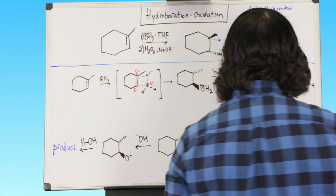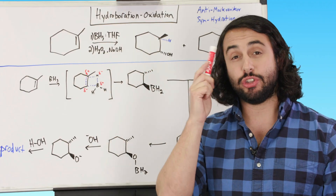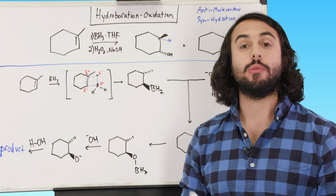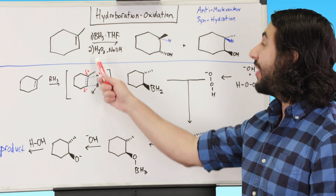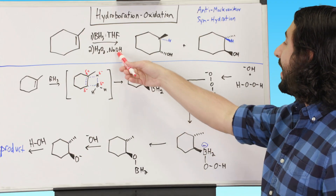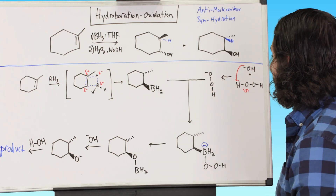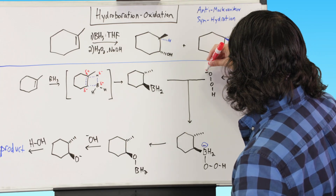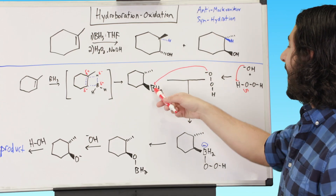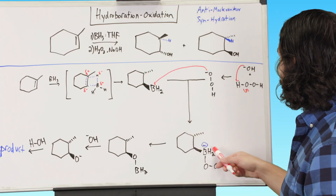Now for the oxidation step. Whenever we see hydrogen peroxide or any peroxide, that's usually our tip-off for anti-Markovnikov chemistry — just as we saw for anti-Markovnikov hydrohalogenation done in peroxides. We're running this in base, so base can go ahead and deprotonate our hydrogen peroxide, giving us this anion. Then this anion can attack the boron atom, and the negative charge is being transferred from the oxygen to the boron — oxygen is now neutralized, having given an electron to boron. But boron has gained an electron and now has four covalent bonds.